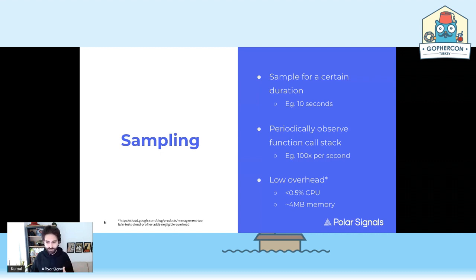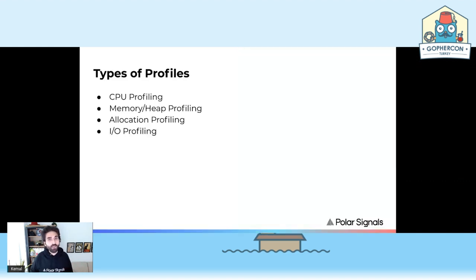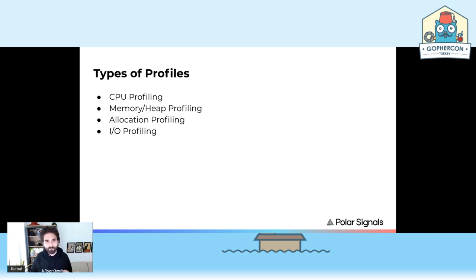This is the way that we actually profile programs. We also have types of profiles — from a process we can collect CPU usage, allocations, check memory, and also check IO operations — what a certain process does on the running host.